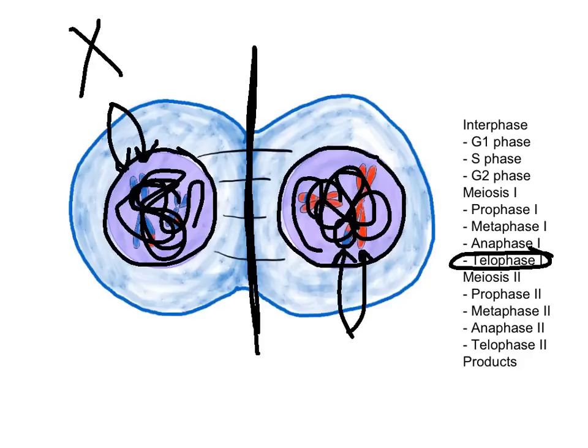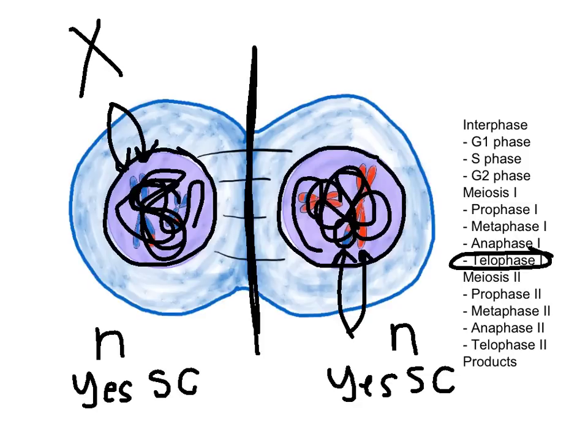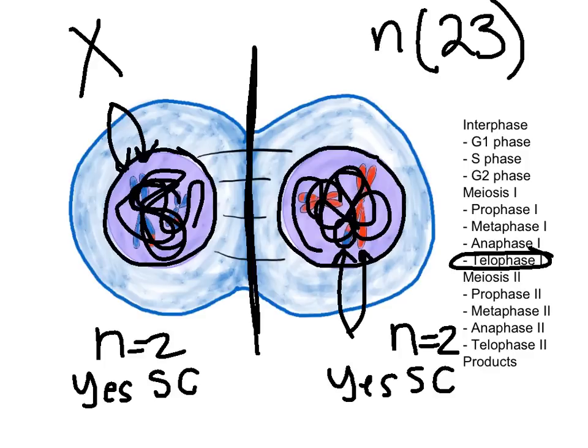So you can now see we have our nuclear envelope that surrounds both of our nucleuses again. The cell has now divided, we can see that both cells have N chromosomes, and both cells actually have, or all the chromosomes in both cells still have sister chromatids, so yes to sister chromatids. And remember that in this case, N equals 2, but in humans we know that N equals 23.